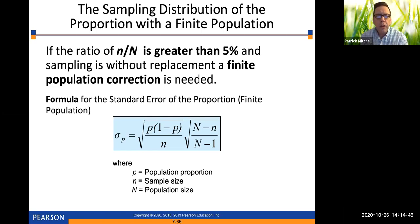All right. And in the last section, we also talked about how to adjust the standard error for a finite population. And this is going to be similar. So if the ratio of sample size to population size is greater than 5%, and sampling is without replacement, then again, you need a finite population correction. So the formula for the standard error of the proportion in a finite population, you start off with your usual square root of p times 1 minus p divided by n. But then you have to multiply that by the square root of big N minus little n divided by big N minus 1.